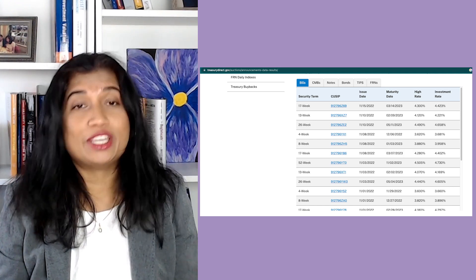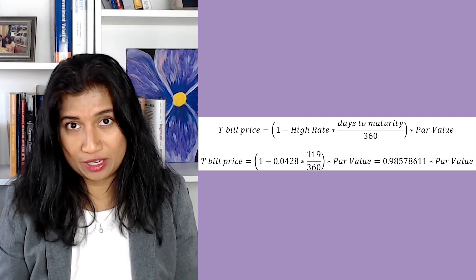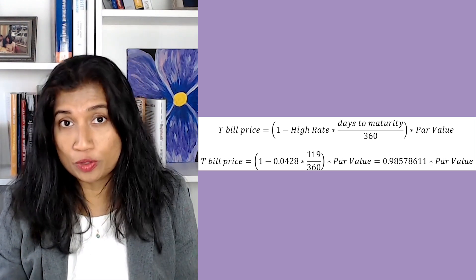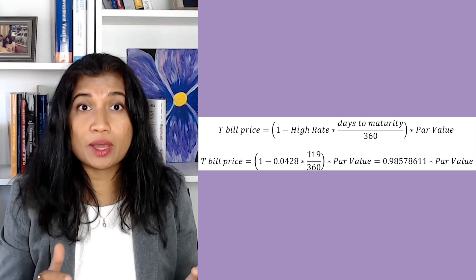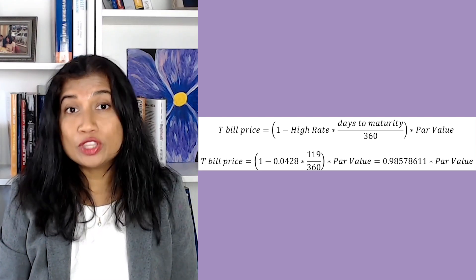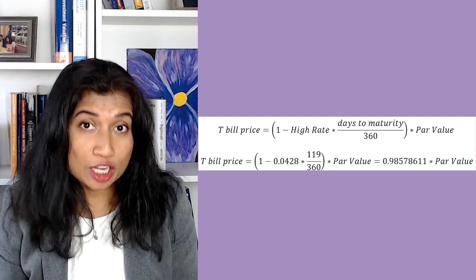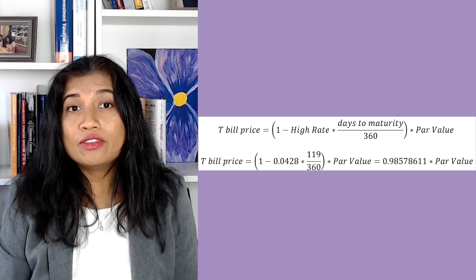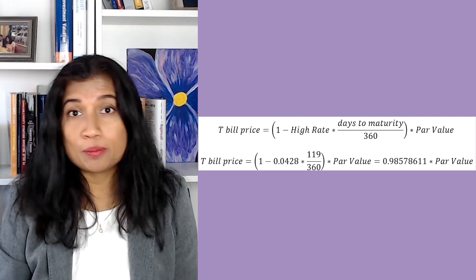Let's say you invested in a 17-week T-bill with a high rate of 4.300%. The way you calculate the discount is by taking the high rate, multiplying it by 119 days to maturity (which is 7 days × 17 weeks), and dividing it by 360, then subtracting that amount from one. When you multiply the discount by the par value, you get the issue price — in this case, 0.98578611 times the par value. The reason we use 360 instead of 365 is because many short-term securities use 30-day months, so 30 × 12 = 360.